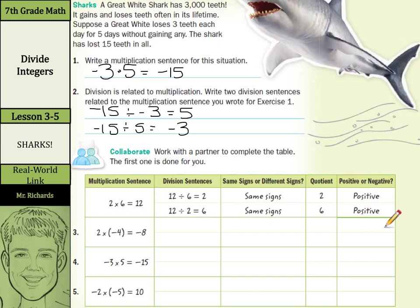Now let's work on number 3. We have negative 8 divided by negative 4. That's going to equal a positive 2, and we have same signs again. Our quotient was 2, and our result was positive.